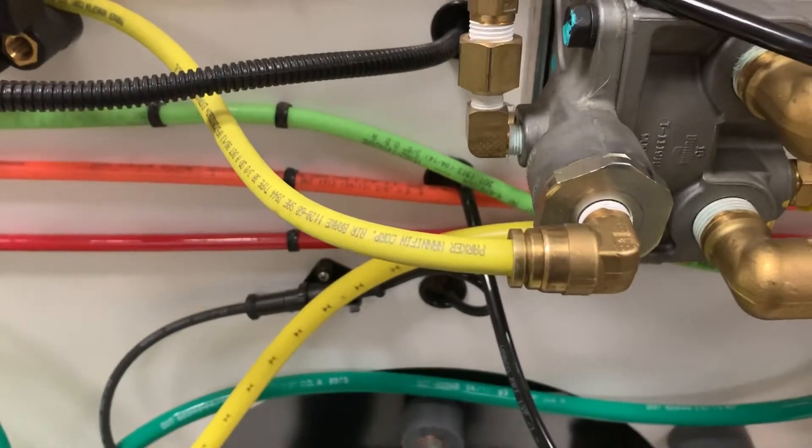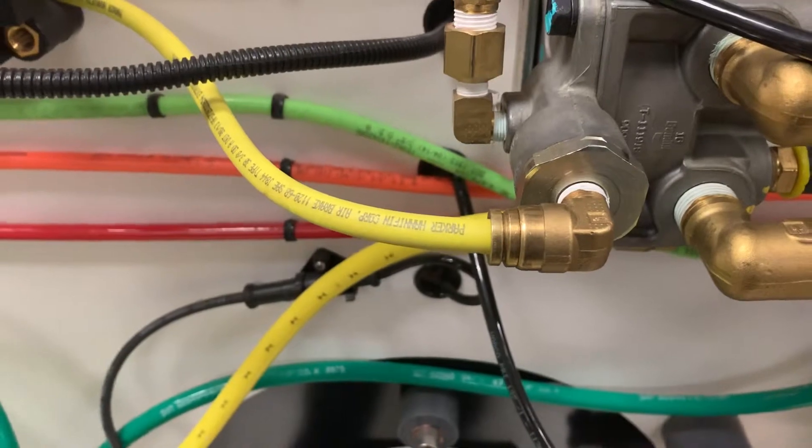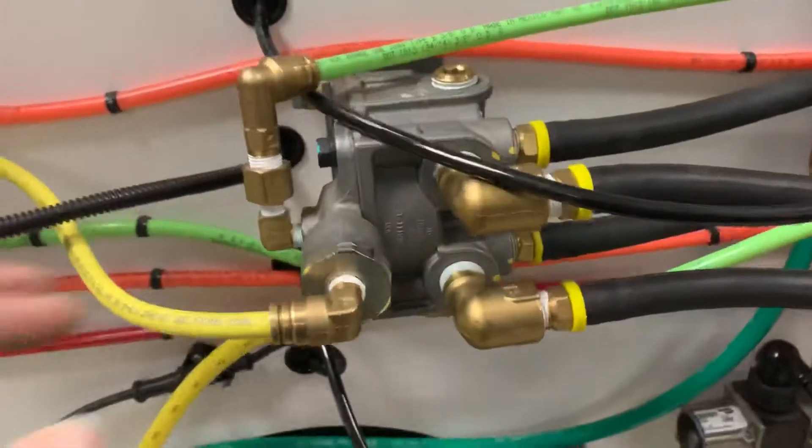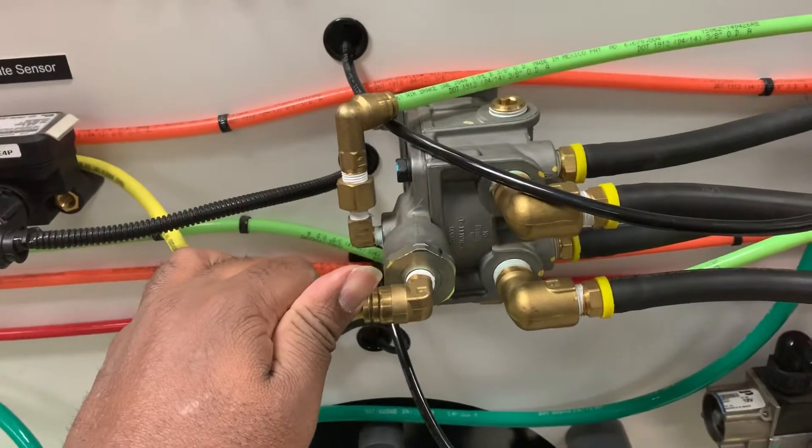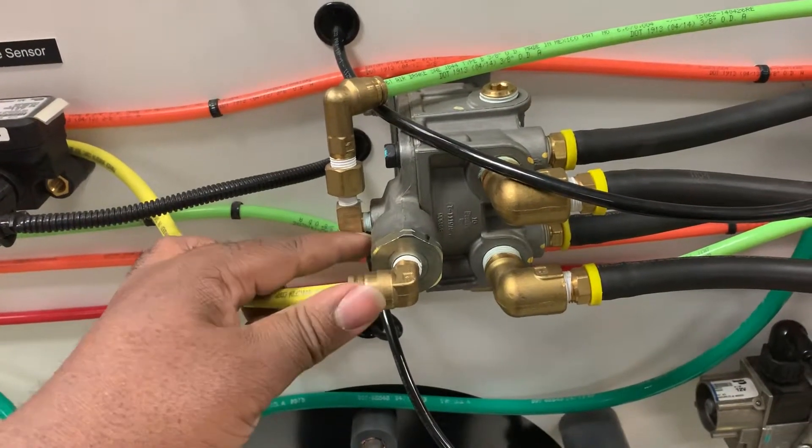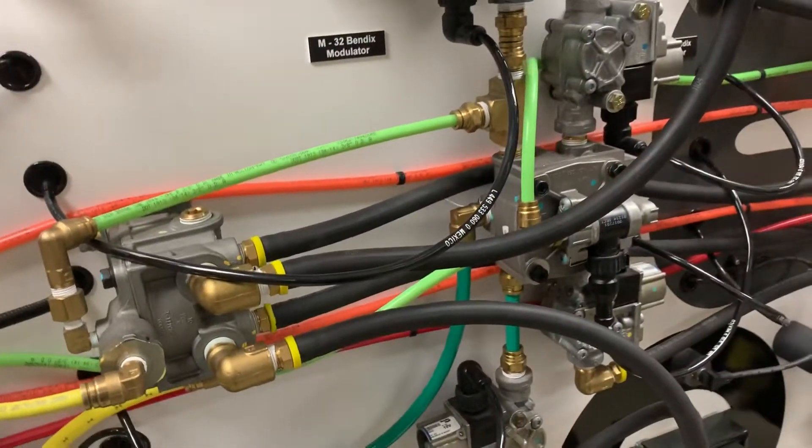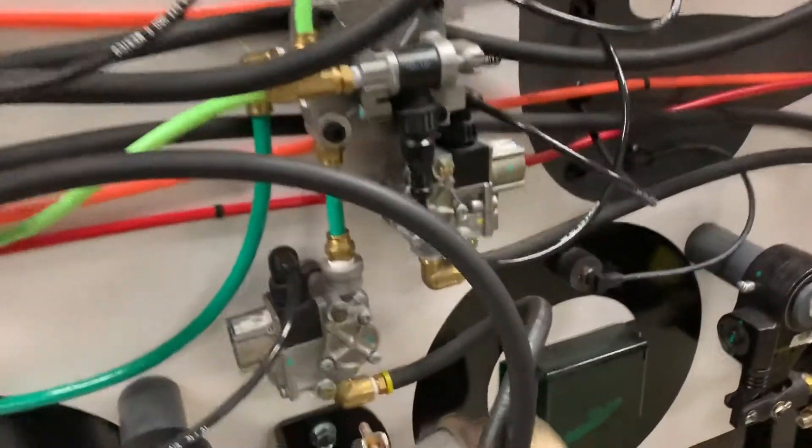But for more modern trucks, trucks that we're likely to see on the road nowadays, what we'll be seeing is more than likely some sort of relay valve with anti-compounding feature built into it. So let's look at what the anti-compounding feature actually does.